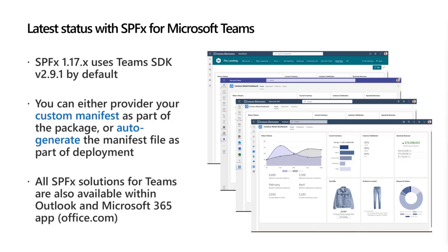When planning SPFx in Microsoft Teams, Outlook, or Microsoft 365, you can either use a custom manifest where you define your own Teams manifest definitions, or auto-generate the manifest file based on deployment options. If you have an existing web part in SharePoint, with only one attribute change in the manifest, you're good to go — no code changes, nothing else. You just add or update a JSON attribute, recompile the code, deploy to the app catalog, and that's it.